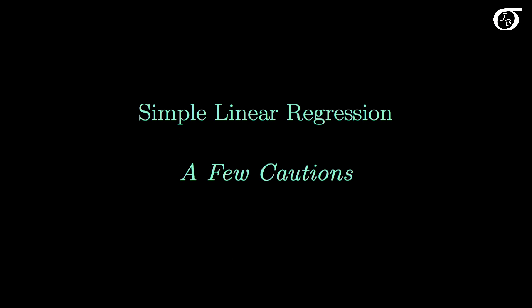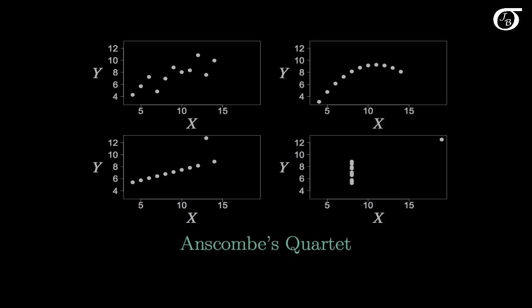Let's look at a few cautions regarding simple linear regression. Here are plots of four separate and distinct data sets. These data sets were created and published by a statistician named Frank Anscombe back in the 70s, and they've come to be known as Anscombe's Quartet.